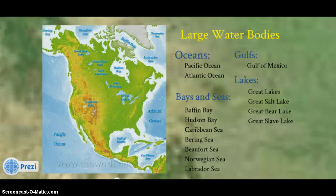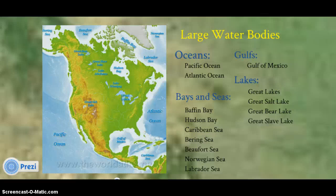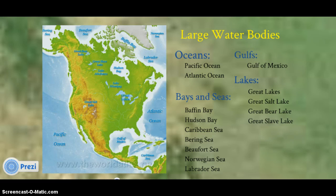This map depicts some of the large water bodies of North America. North America is bounded on the west by the Pacific Ocean and the Atlantic Ocean to the east, and many bays and seas abound on the coastal edges. The Gulf of Mexico is also very important for many of the weather patterns across the continent. Some of our major lakes are the Great Lakes bordering the U.S. and Canada, the Great Salt Lake in Utah, and the Great Bear Lake and Great Slave Lake of Canada.